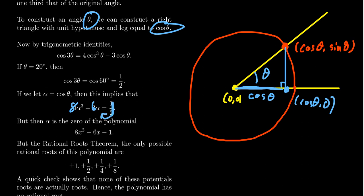Move the 1 to the other side. You then get that 8α³ minus 6α minus 1 equals 0. Therefore, alpha is a root to the polynomial 8x³ minus 6x minus 1.